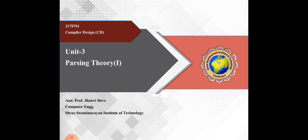In our previous sessions, we have discussed about introduction of compiler, introduction of translator, three types of translator which is assembler, interpreter and compiler, phases of compiler, cousins of compiler, passes of compiler, front end and back end of compiler, analysis and synthesis model of compiler.